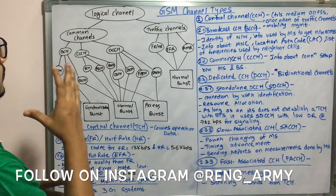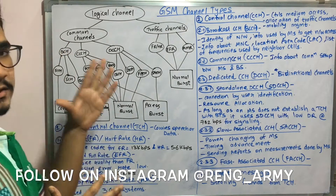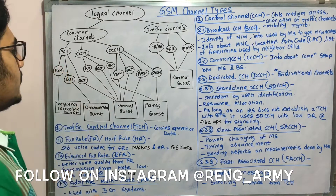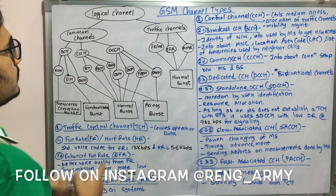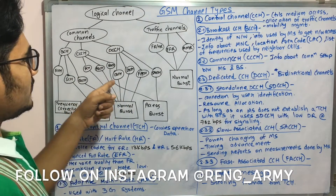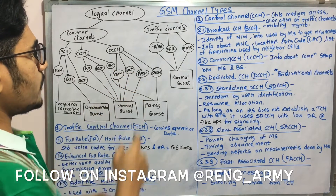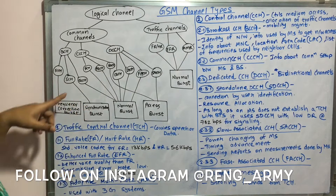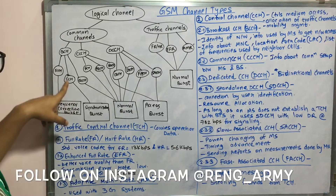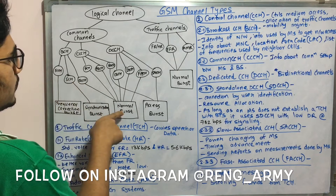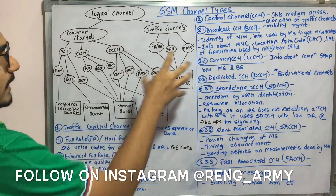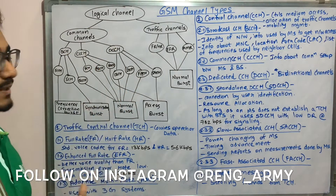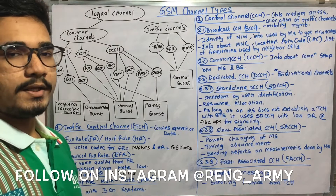Common channels are divided into three branches: BCH, CCCH (common control channel), and DCCH (dedicated control channel). BCH is further divided into FCCH, SCH, and BCCH. FCCH maps to the frequency correction burst, SCH maps to the synchronization burst, and BCCH maps to the normal burst. The normal burst carries the majority of channels.